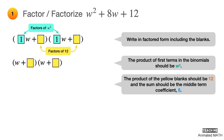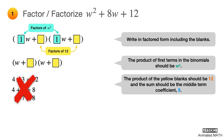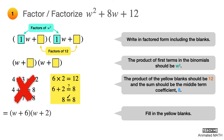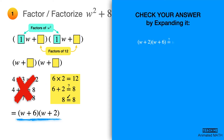There will be some trial and error involved in looking for the factors. Let's start with 4 and 3. 4 times 3 is equal to 12, but when you add 4 and 3, it is not equal to 8, so these aren't the factors we are looking for. How about 6 and 2? 6 times 2 is equal to 12, and when you add 6 and 2, the sum is equal to 8. So 6 and 2 are the factors we are looking for. Fill in 6 and 2. The final answer is W plus 6 times W plus 2. Don't forget to check your answer by expanding it using polynomial multiplication as shown here.